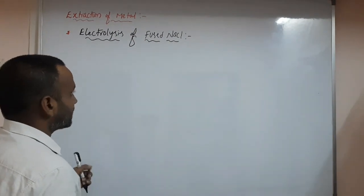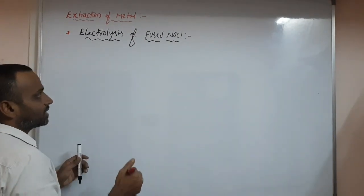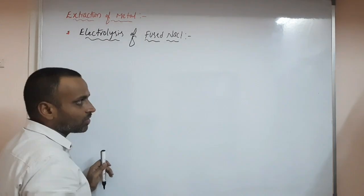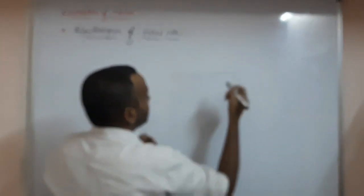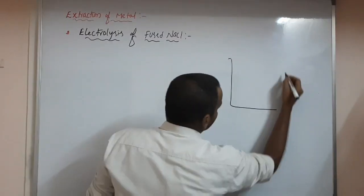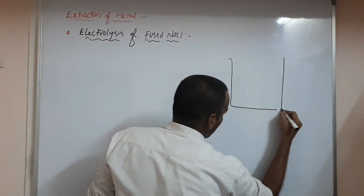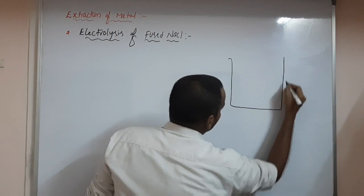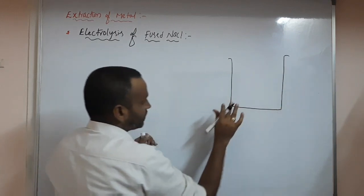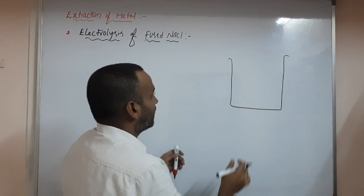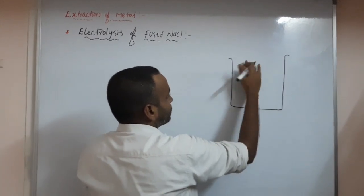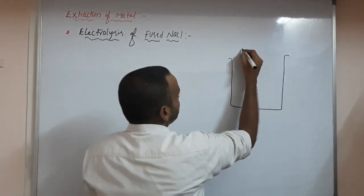Electrolysis actually happens in an electrolytic cell. An electrolytic cell generally consists of an anode and cathode. So this is a small beaker like this — a simple rough diagram I am drawing here.